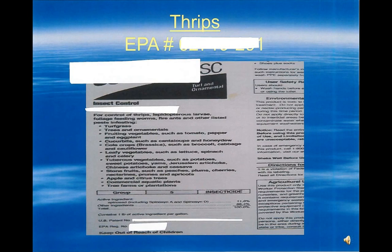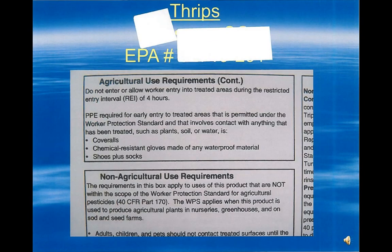For the control of thrips, this product contains an active ingredient on the Nevada list, spinosad, and has both agricultural and non-agricultural uses listed on the same label. The agricultural use requirements would apply for commercial greenhouse use. Note that the re-entry interval is four hours for this product and that applicators must use coveralls, chemical resistant gloves, shoes, and socks when applying this material.